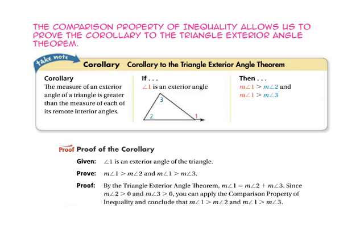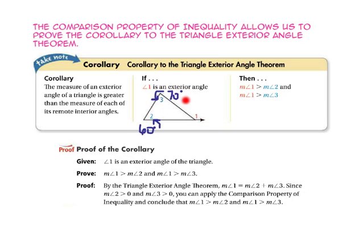The comparison property of inequality allows us to prove the corollary to the triangle exterior angle theorem. The corollary states that the measure of an exterior angle of a triangle is greater than the measure of each of the remote interior angles. For instance, if the measure of angle 2 is 60 degrees and the measure of angle 3 is 70 degrees, then the measure of angle 1 would equal 130 degrees. Since 130 is greater than 60 degrees and greater than 70 degrees, the measure of angle 1 is greater than both angle 2 and angle 3.